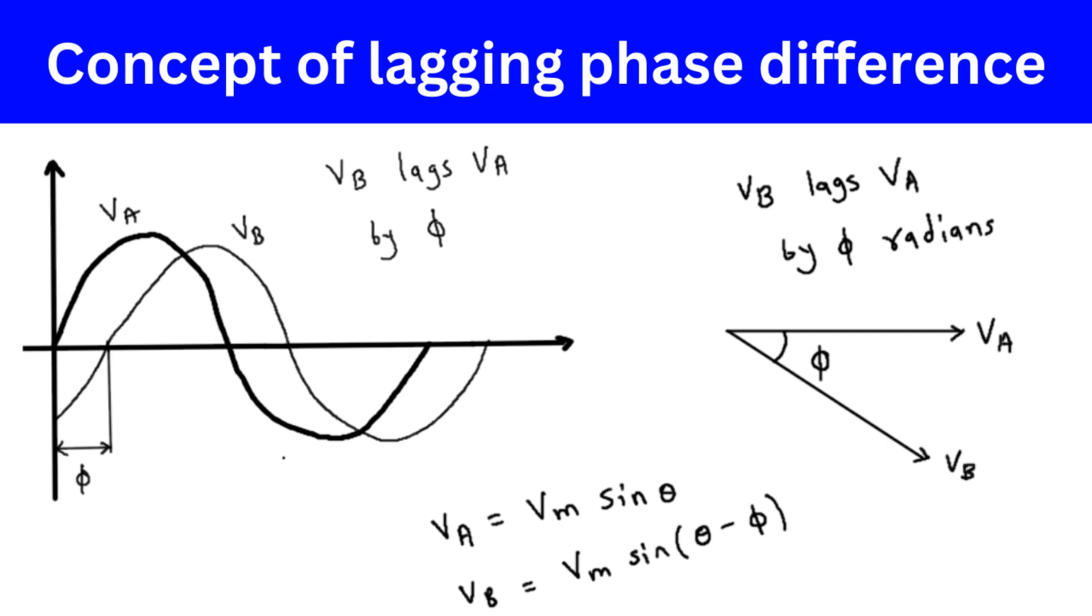In the case of voltage waveforms Va and Vb, we can represent their amplitudes and phases using phasors.